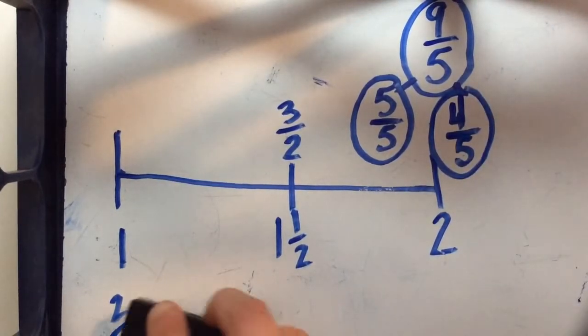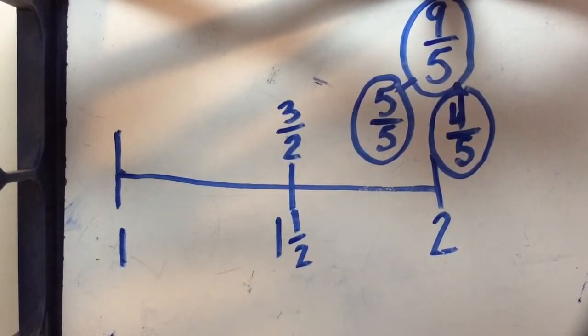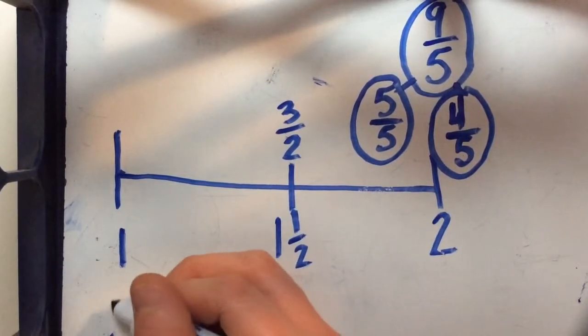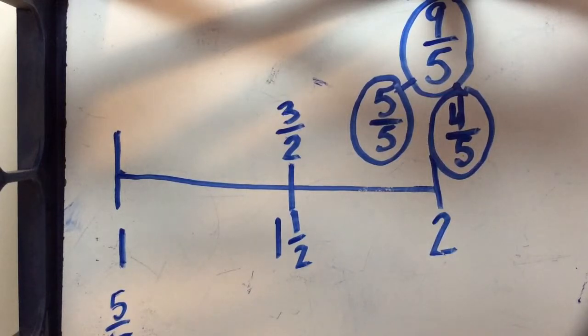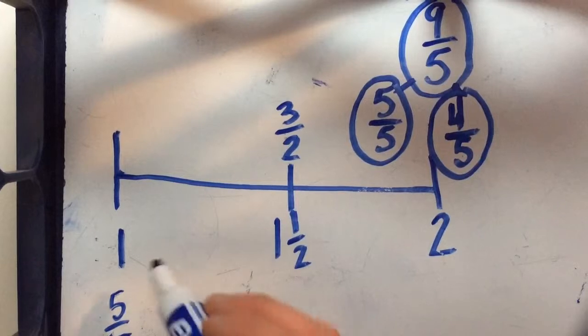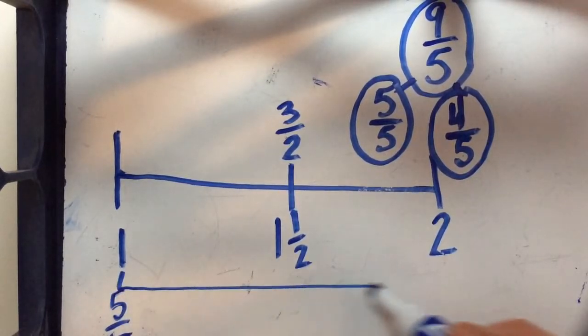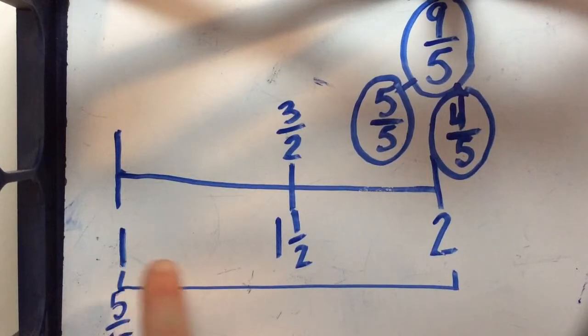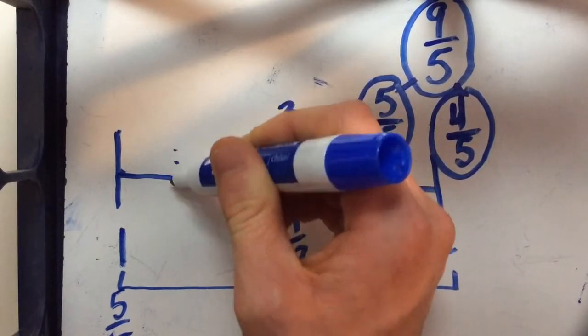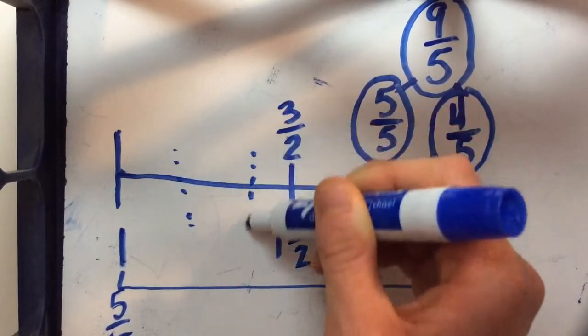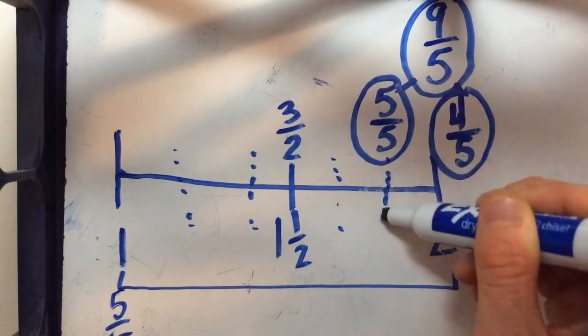So let's come back over to our number line and in this case our 1 would be represented by 5 fifths. I need to count up 4 more fifths and let's remember that this is our whole. So I'm thinking about fifths as they might break up between this point and this point. So I'm just going to kind of estimate there's 1, 2, 3, 4.